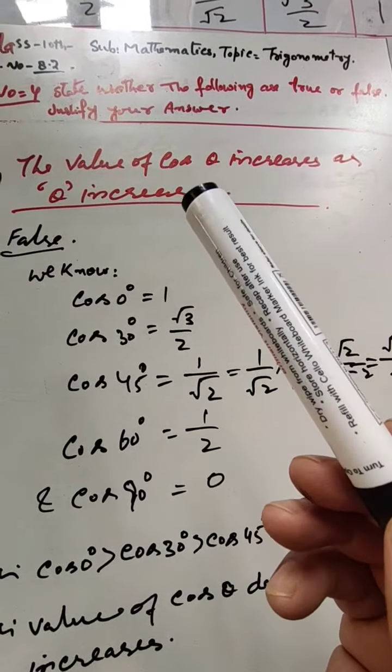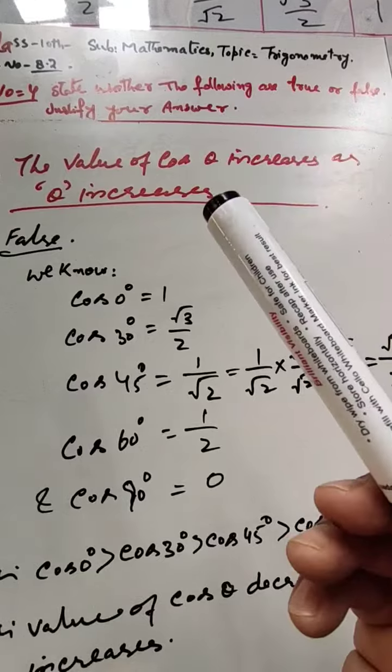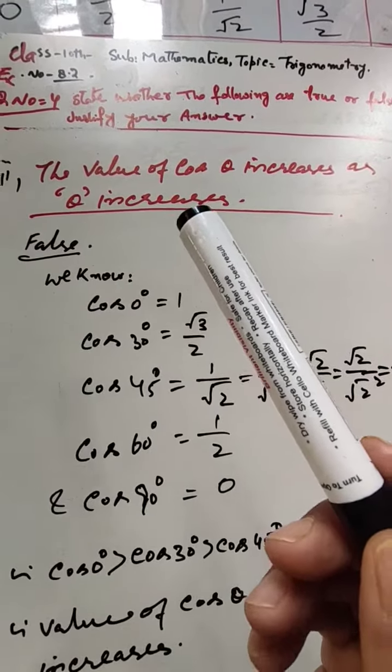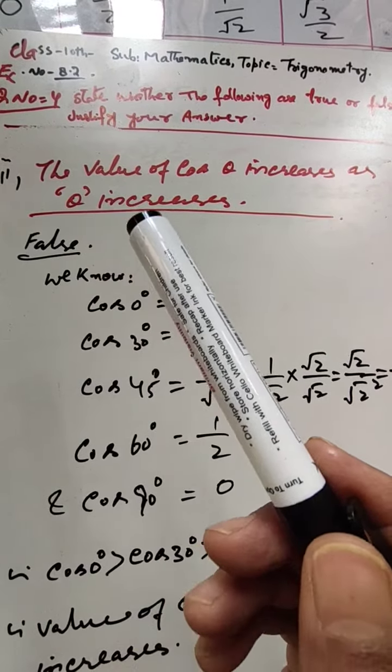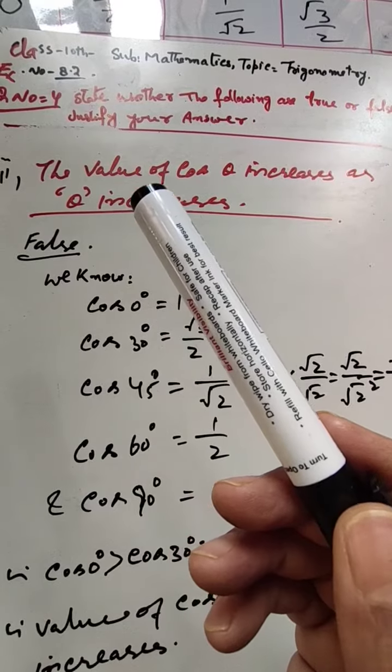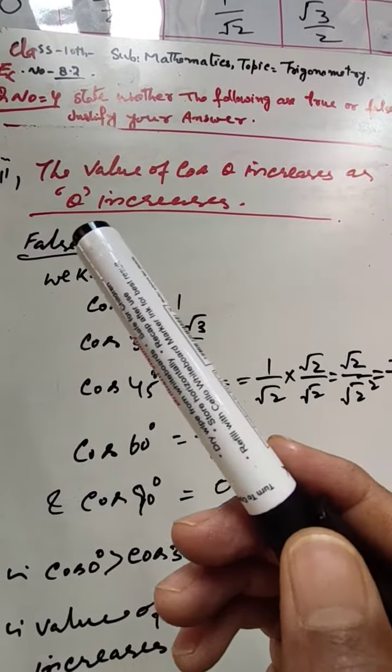We have to see if the value of cos θ increases with the increase in the value of θ. But it is false. It is not the same as in the case of sine θ. We know that sine θ increases as θ increases, but the reverse is the case for cos θ.